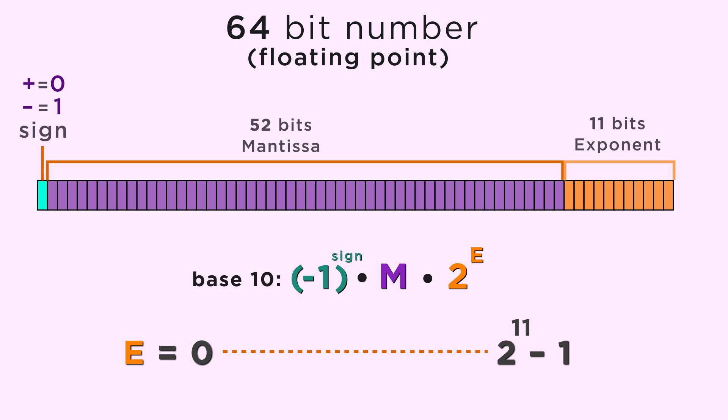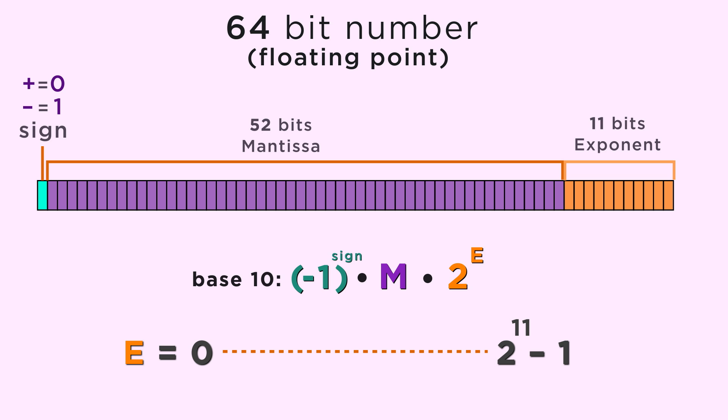e is between 0 and 2 to the 11th minus 1. So the exponent is always non-negative. The first bit tells us whether the entire number is positive or negative, essentially whether it's on the right half or left half of the number line. But in scientific notation, the exponent has a separate sign. It's positive for numbers with absolute value bigger than 1 and negative for numbers close to 0.